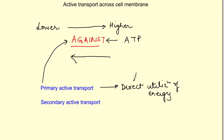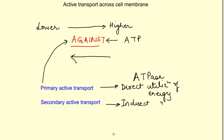So there should be an enzyme — ATPase — which breaks down ATP, and the energy which is released is utilized for the transport of the substance. On the other hand, in secondary active transport there is indirect utilization of energy.